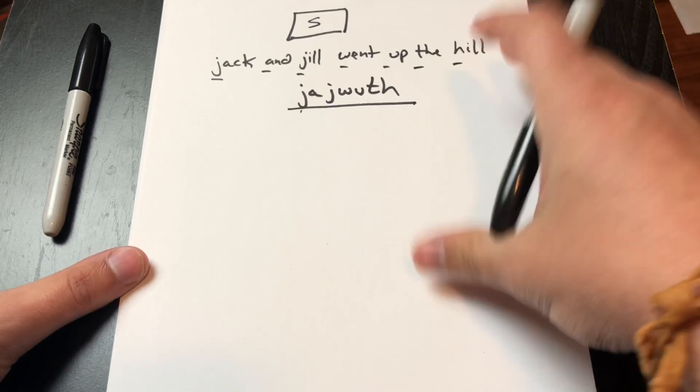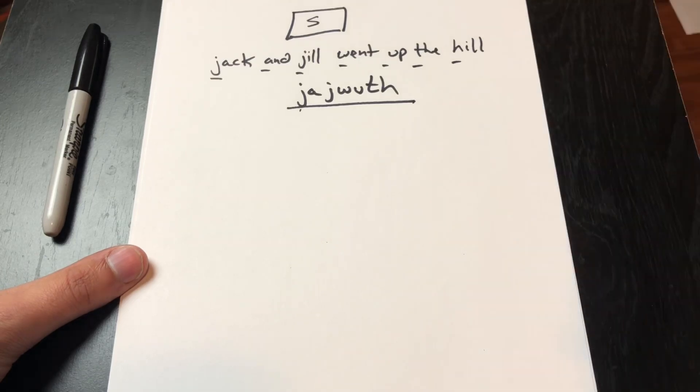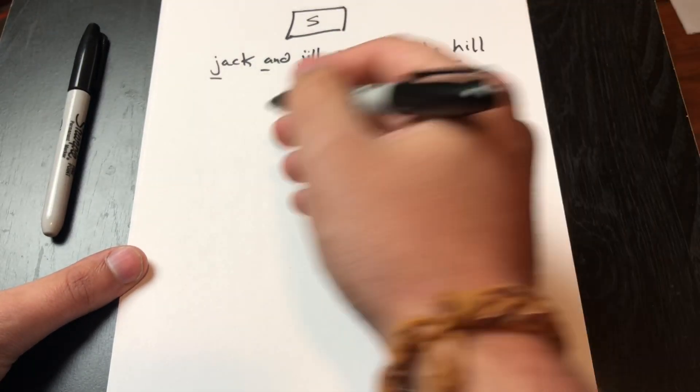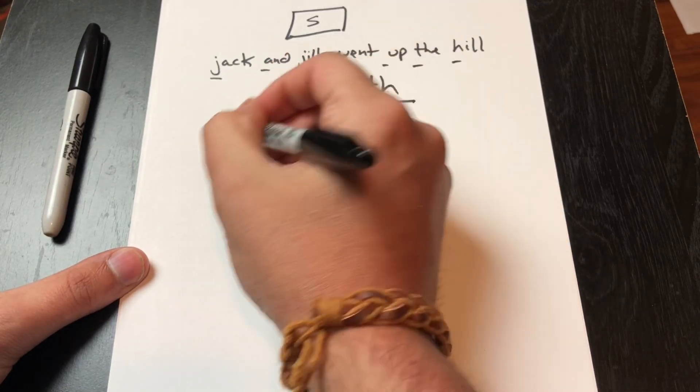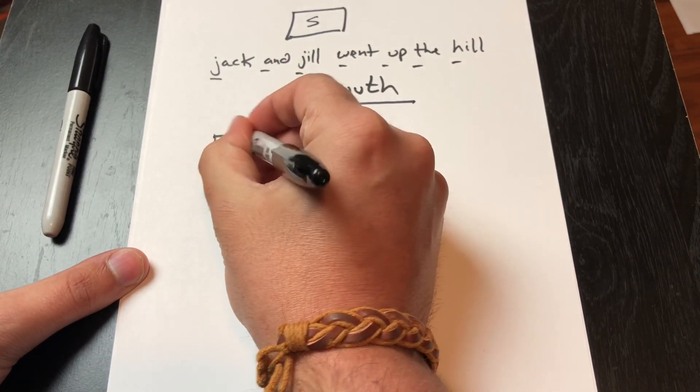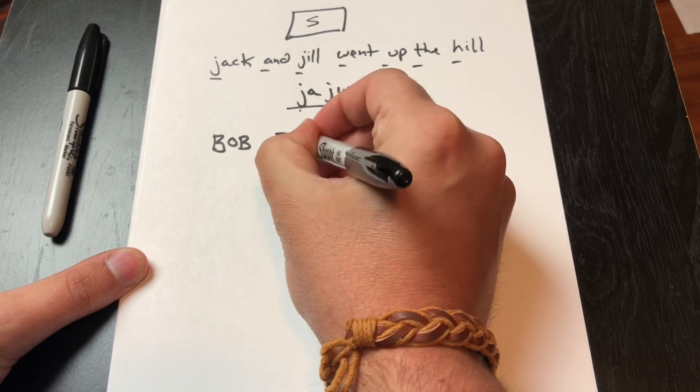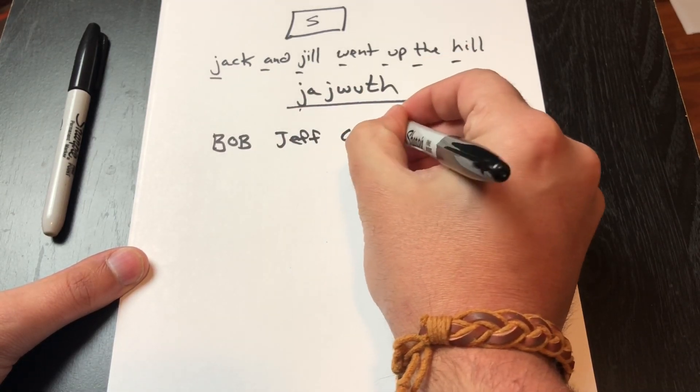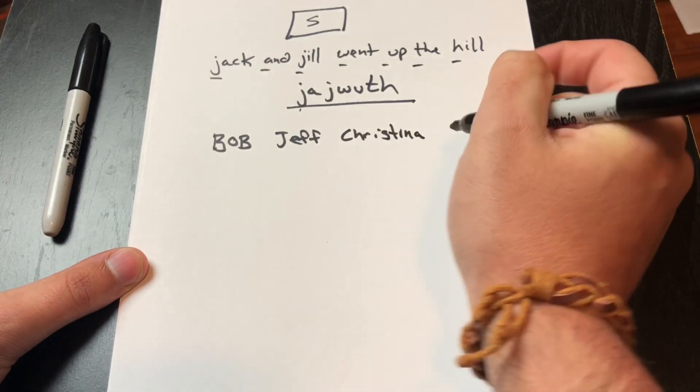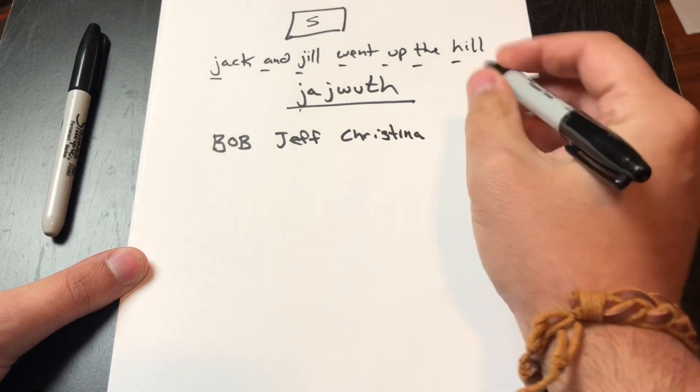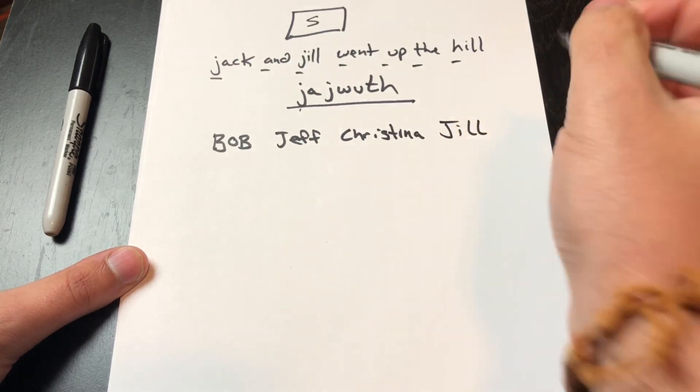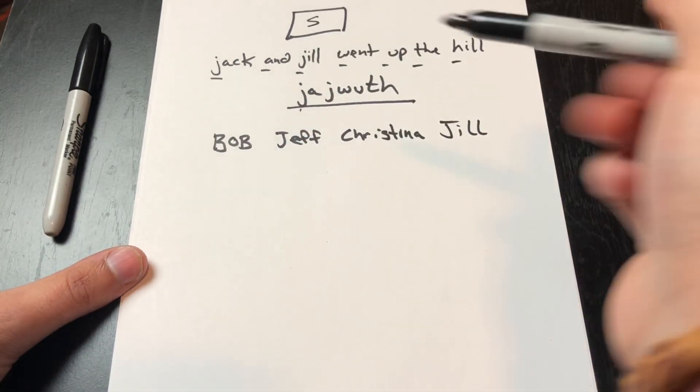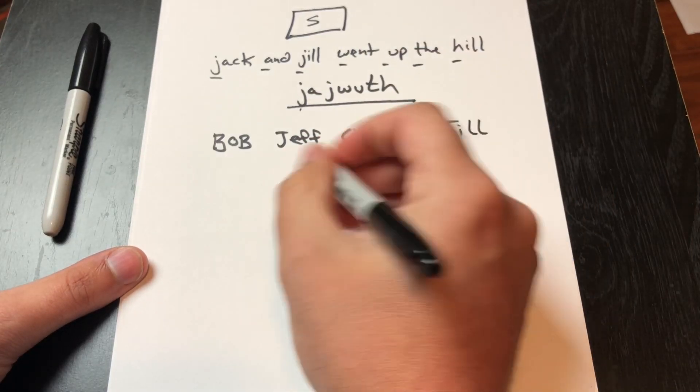Other examples that I've seen people use is maybe it's their siblings names or their kids names. So maybe you have a sibling named Bob, Jeff, Christina, and we'll just stay with Jill. Same kind of thing, maybe you do it by oldest to youngest, something like that that's specific to you. So you can literally make this out to be B J C J.